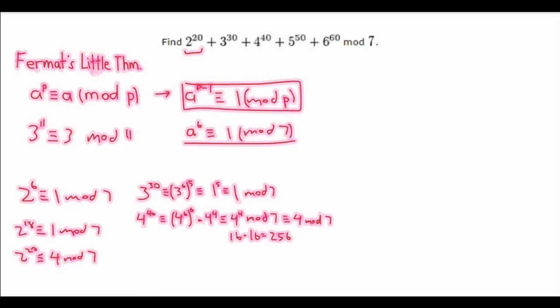Now, 5 to the power of 50. This is congruent to 5 to the power of 6. How many 6's can fit in 50? We can fit in 8 6's. To the power of 8 times, there are 2 left over, 5 squared, which is congruent to 25 mod 7. Which is congruent to 4 mod 7.